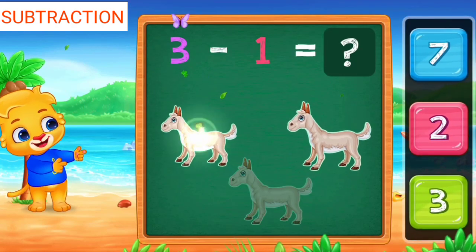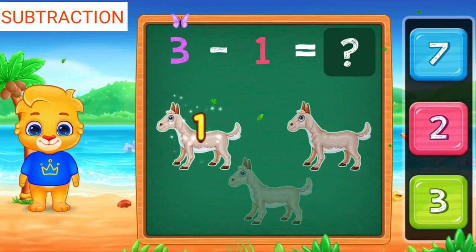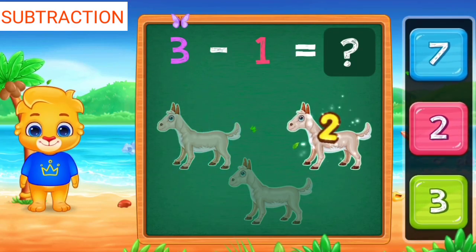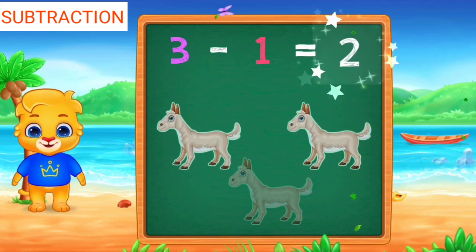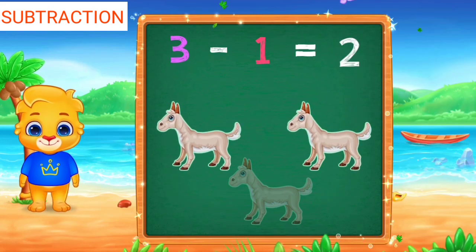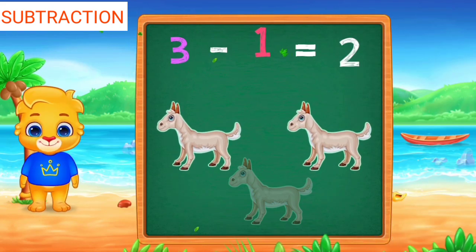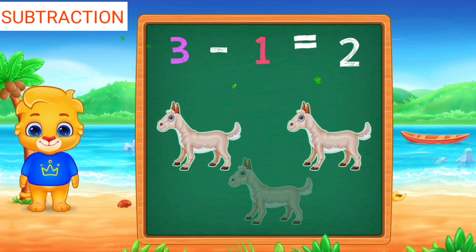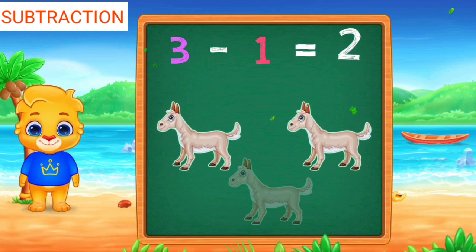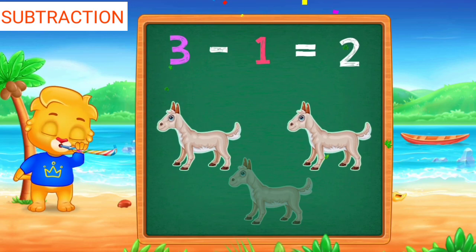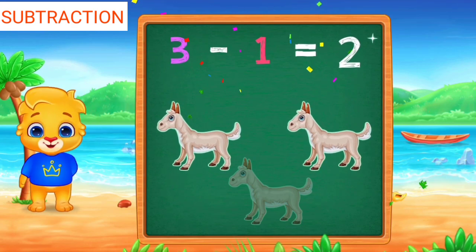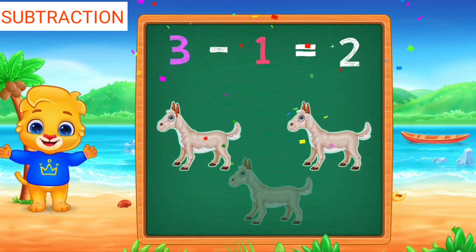One, two, two, three minus one equals two. One, two, three, four, five, six, seven minus one equals two.